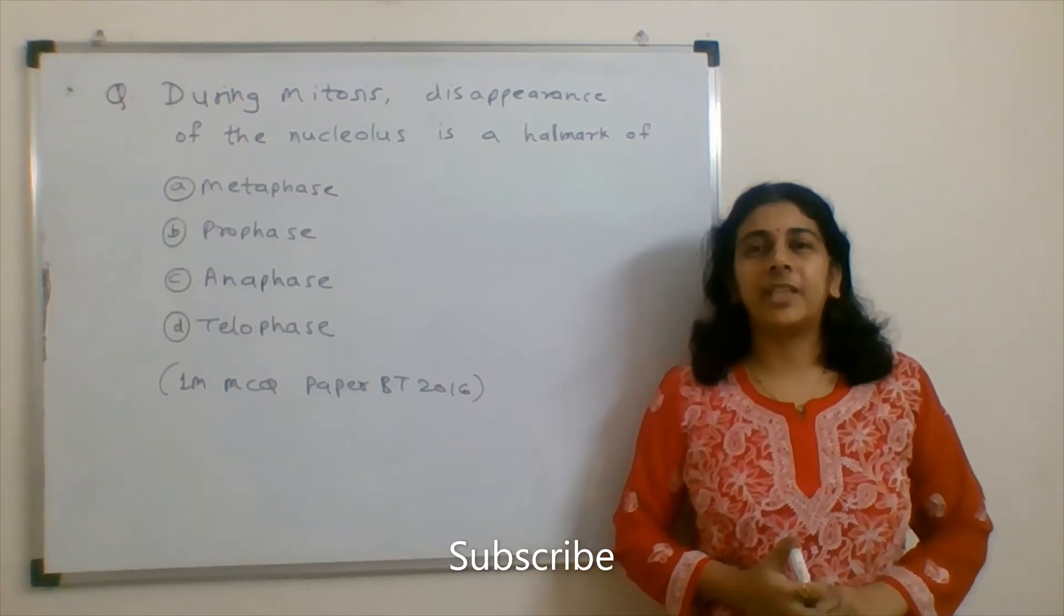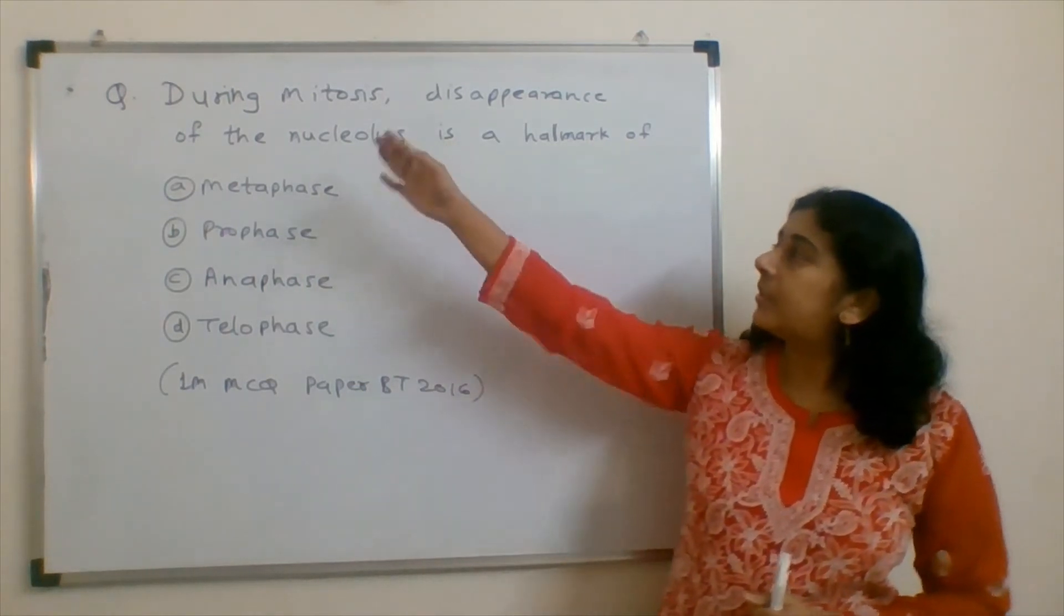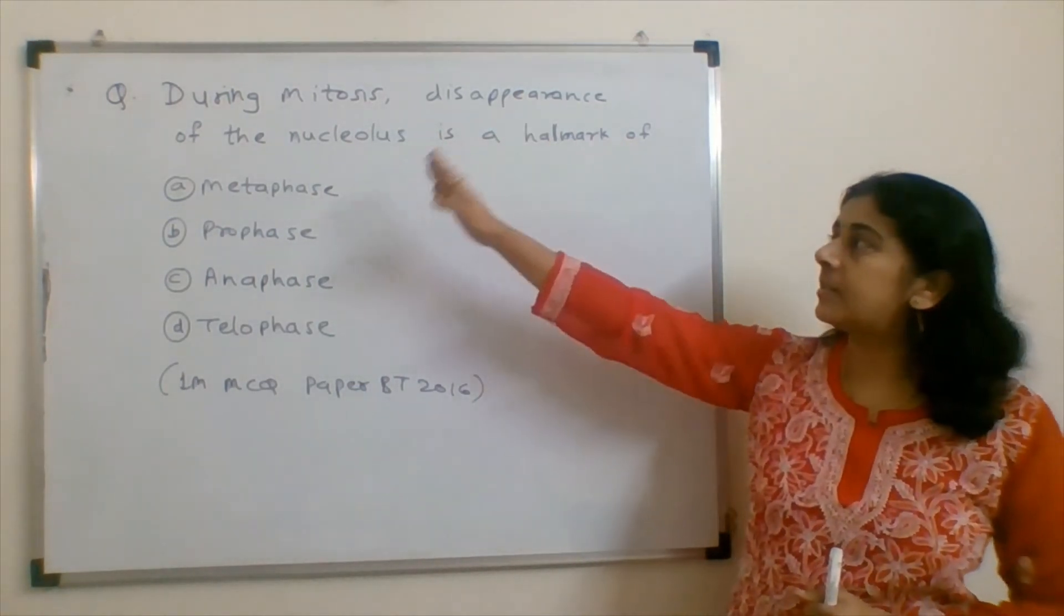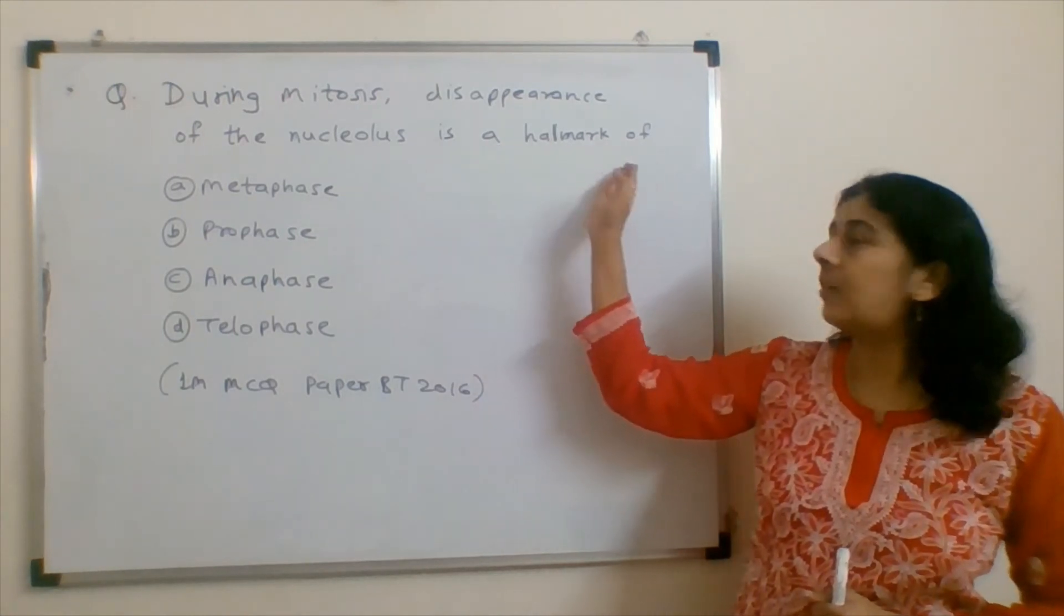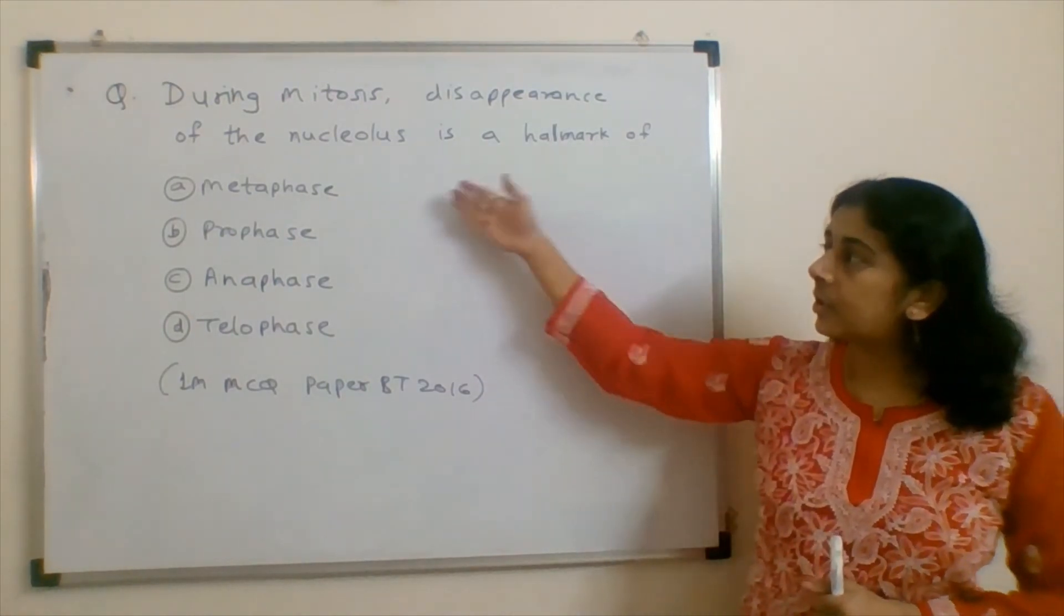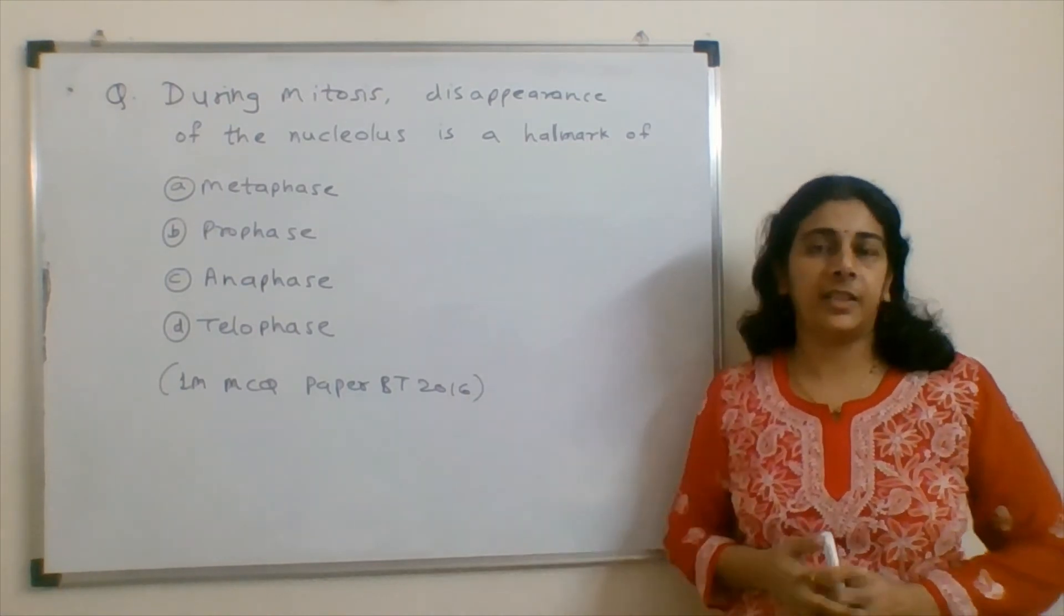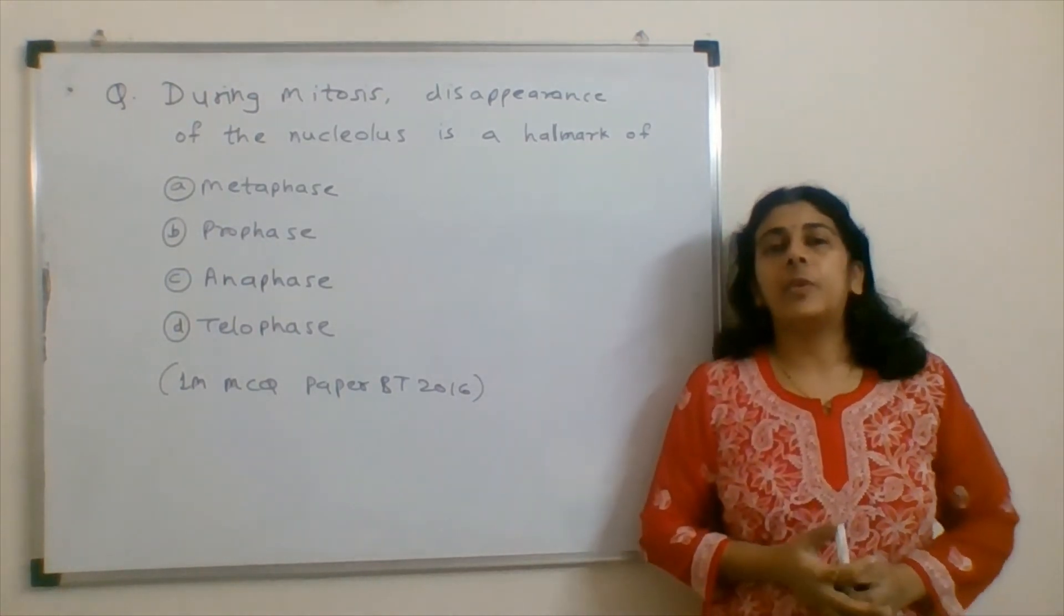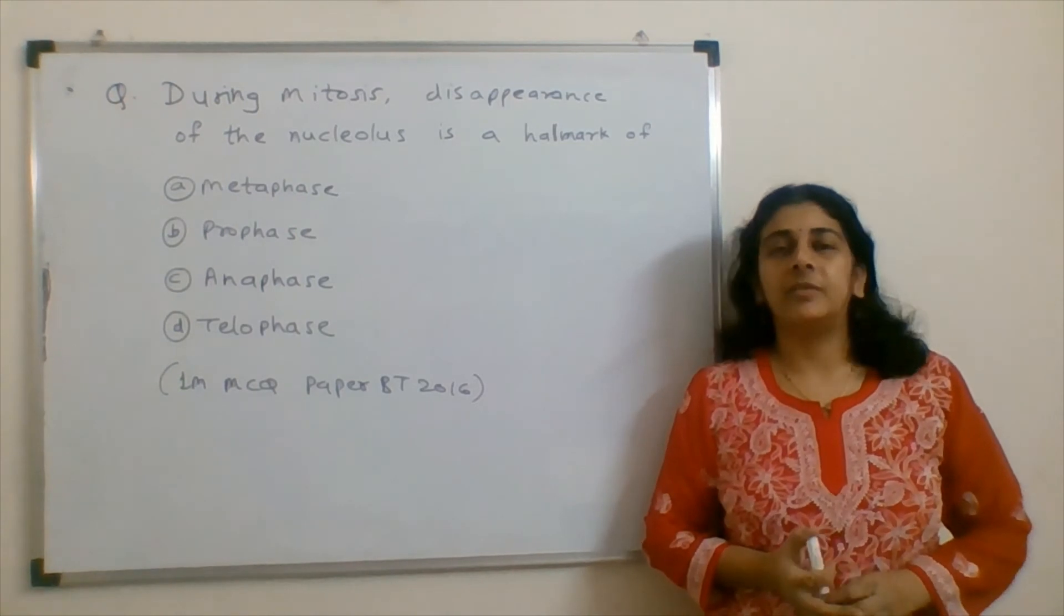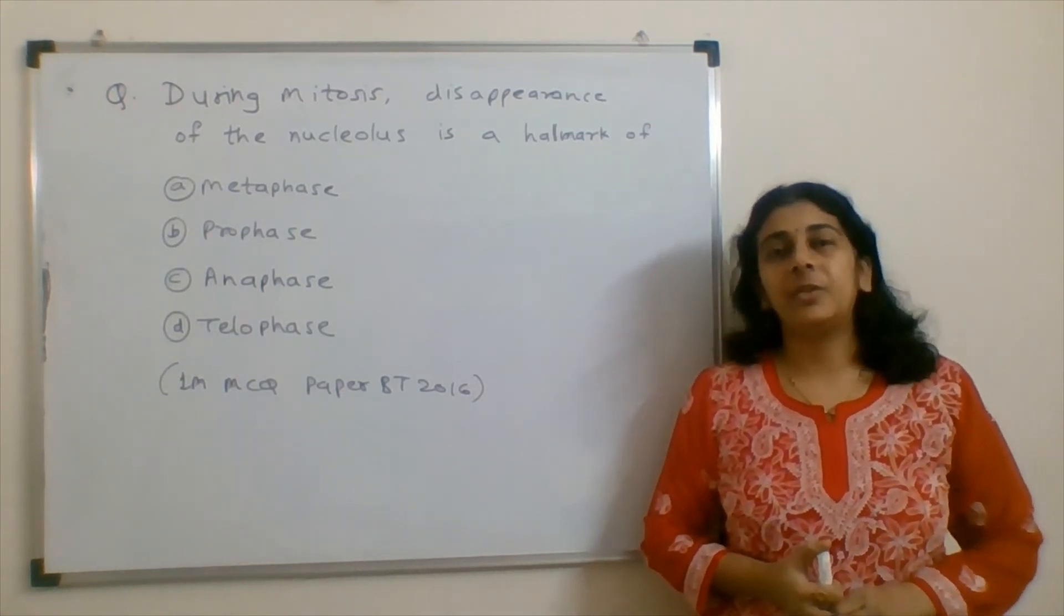Let's have a question for my next video. During mitosis, disappearance of the nucleolus is a hallmark of. The options are metaphase, prophase, anaphase and telophase. This is a one-mark MCQ type of question from paper of biotechnology 2016.